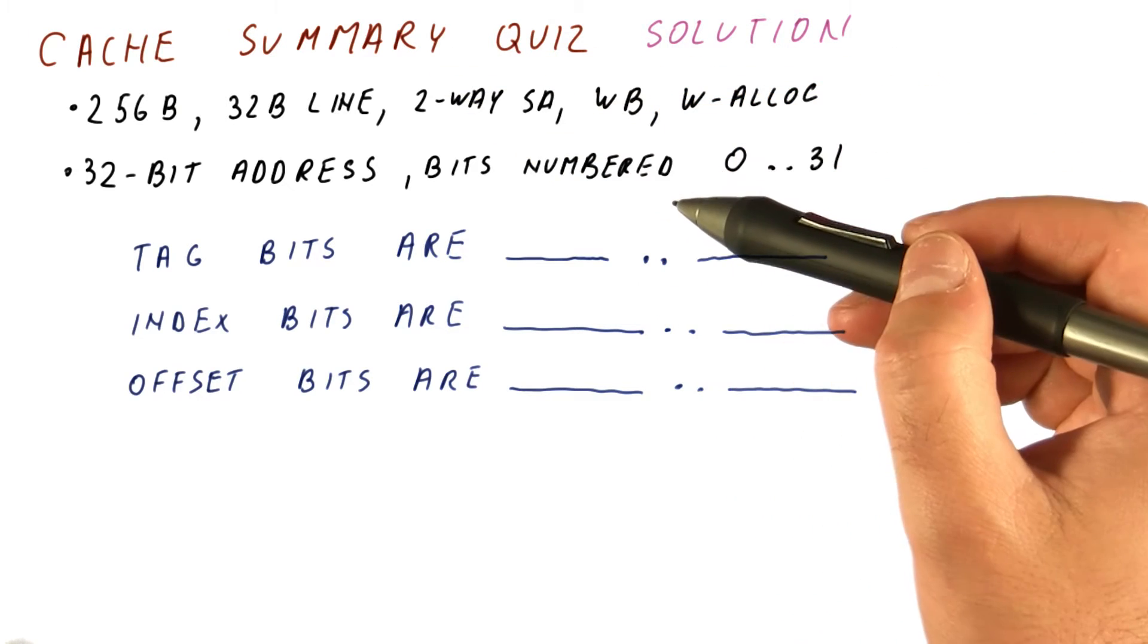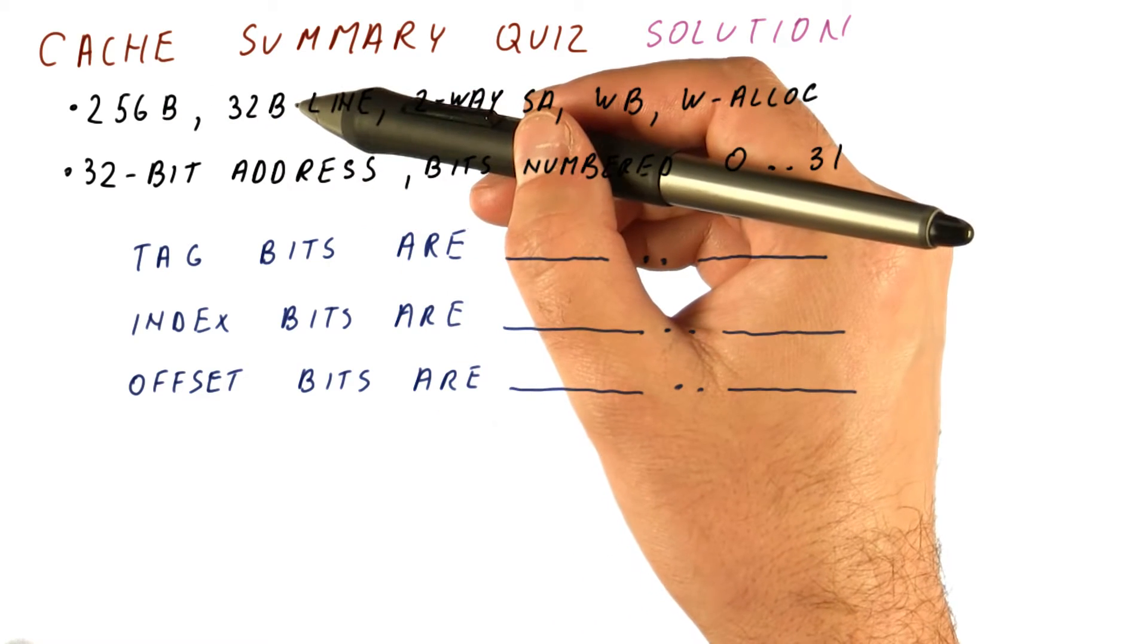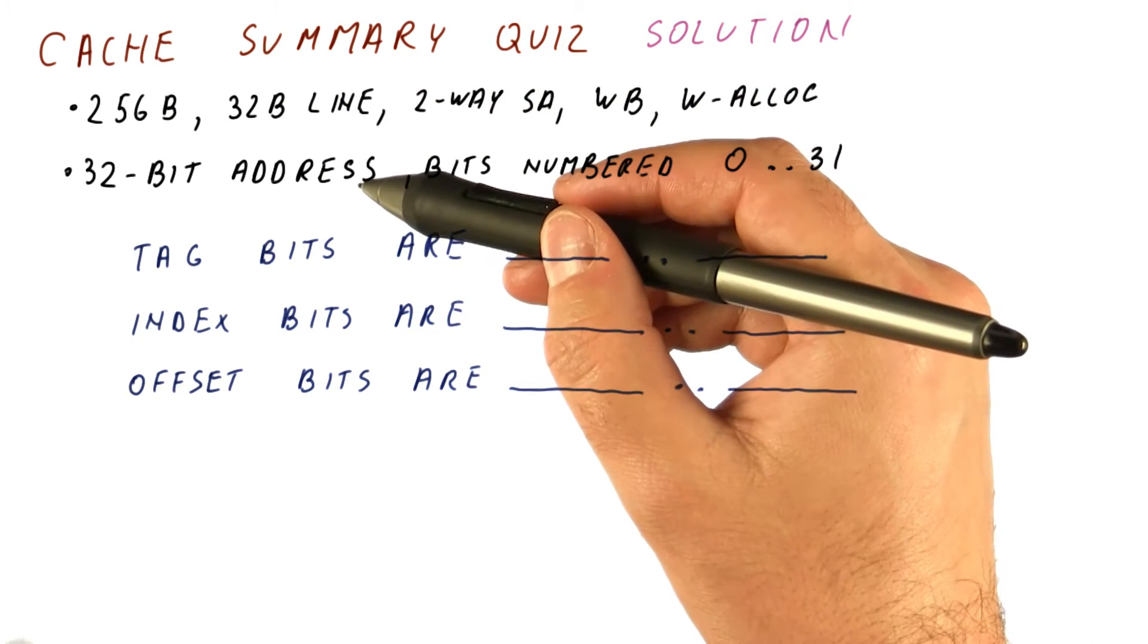Let's discuss the solution to our cache summary quiz, part one. We have a 256 byte cache with 32 byte lines and two-way set associative. We have a 32-bit address.